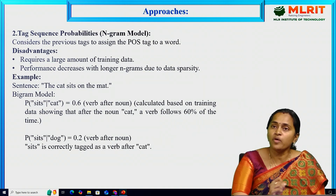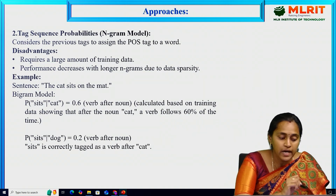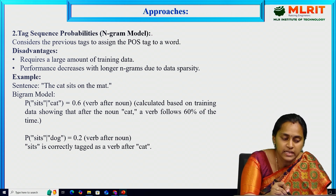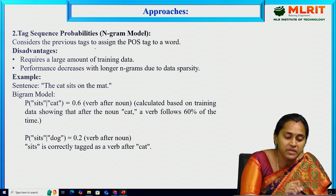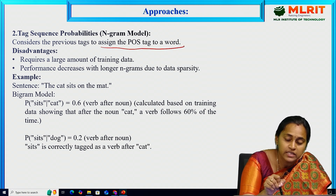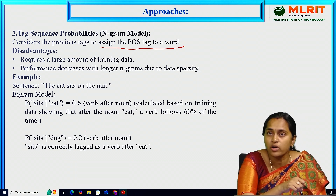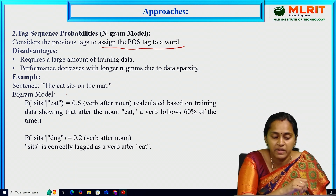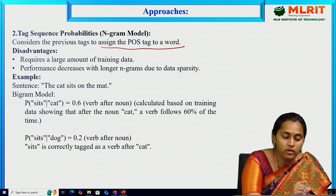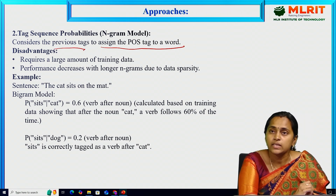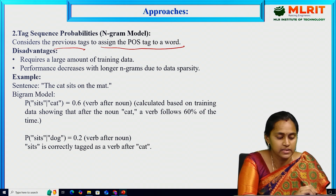To overcome this word frequency approach issue, we use the tag sequence probabilities approach. Here we add probabilities to sequences of tags — it considers previous tags to assign POS tags. In the word frequency approach we were not considering previous words; here we depend on previous tags. This is the major difference between word frequency and tag sequence probabilities.